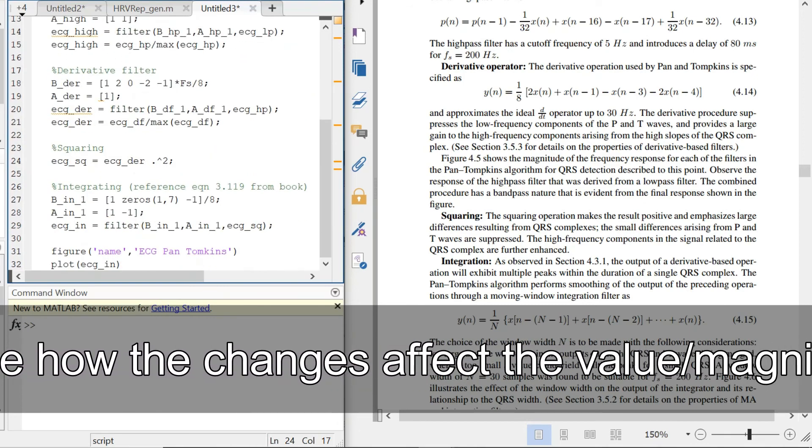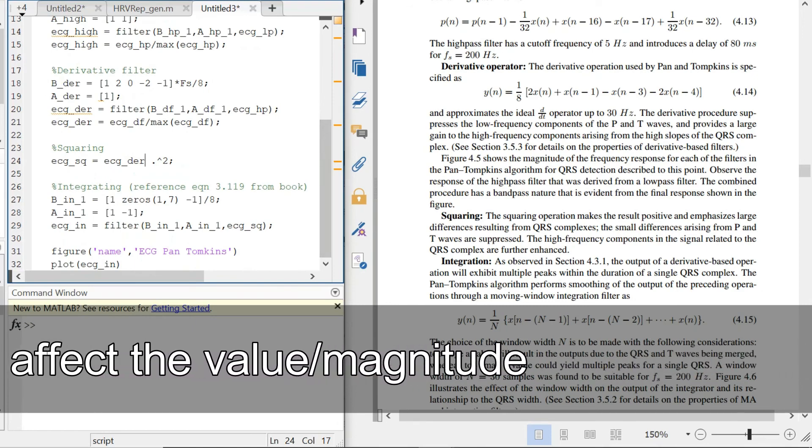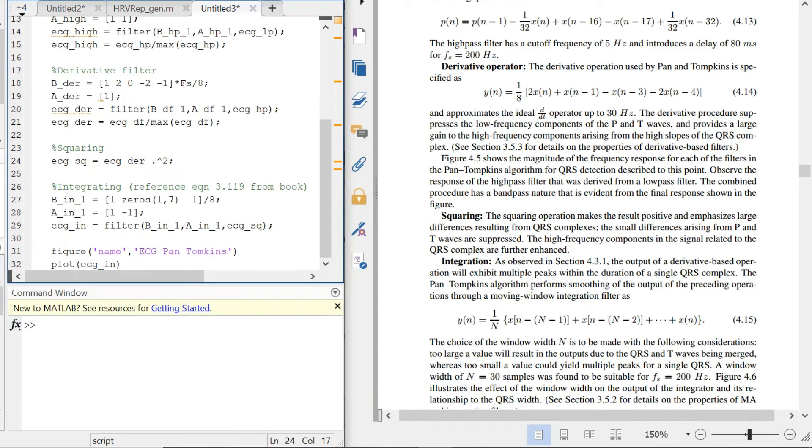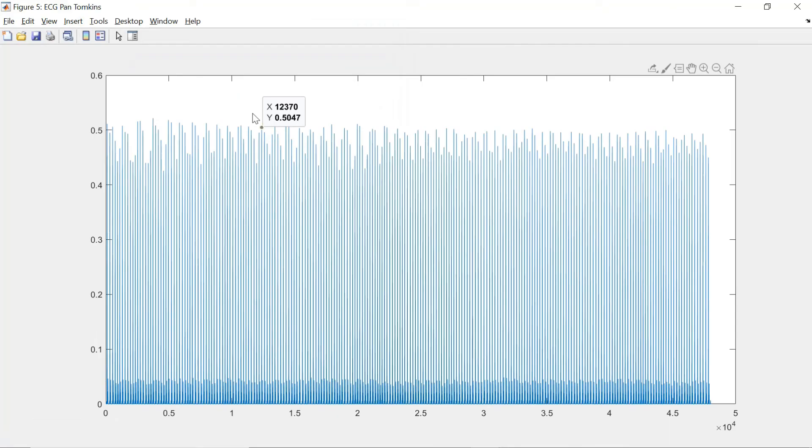We end up with an integral ECG signal which we can plot with a simple plot function and give it x-label and y-label. So let us run this and see what we get.